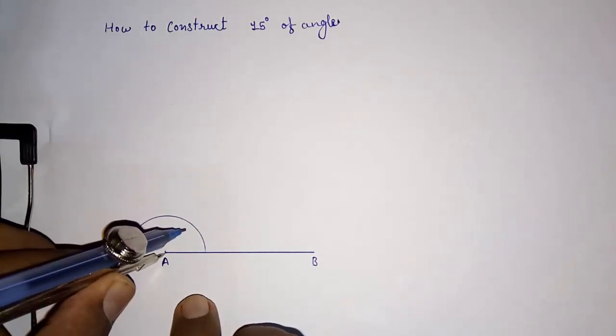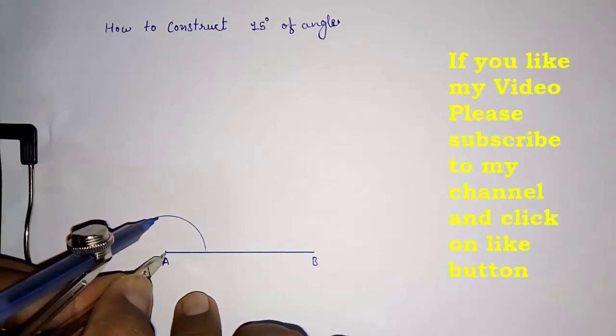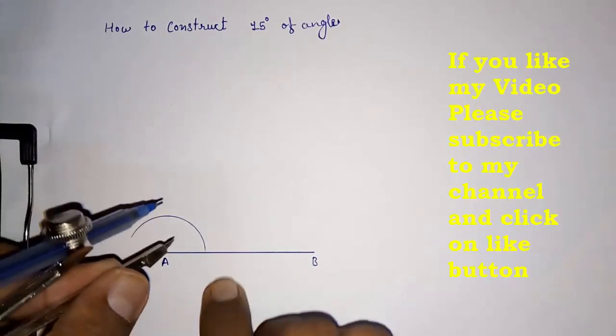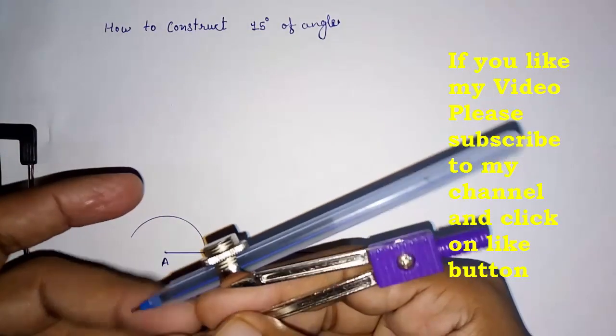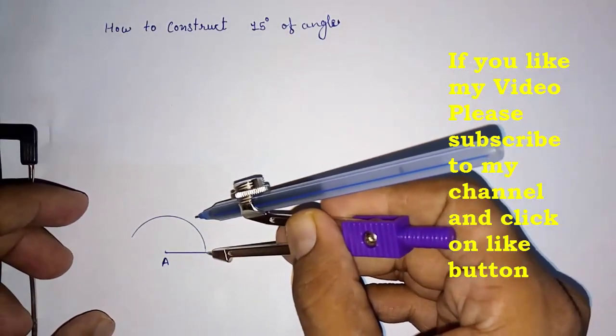First we have to draw this semicircle structure, and with the same measurement, take this zero degree as the center point.